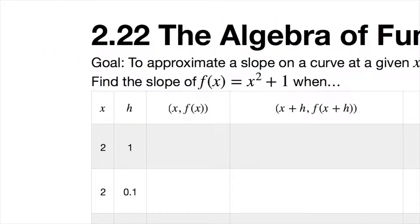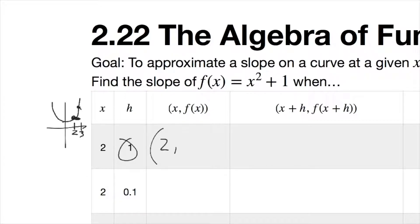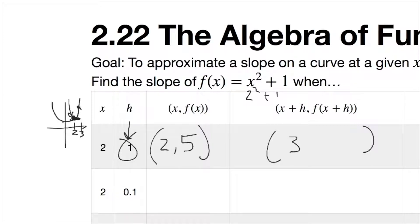Let's choose a specific function like x squared plus 1, which is a parabola. If the goal is to find the slope when x equals 2, choose another point that's close, like x equals 3. The horizontal distance would be 1. So our first point is (2, 5), since 2 squared plus 1 equals 5. The second point is (3, 10), since 3 squared plus 1 equals 10.